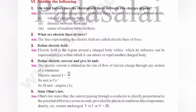Next, define electric current and give its unit. Electric current is the rate of flow of electric charge through any section of a conductor. The electric current I equals Q divided by t. Its unit is ampere (A).